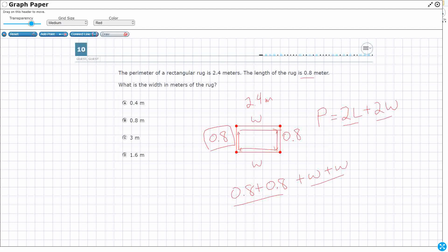So I can say my perimeter equals, I can either do 0.8 plus 0.8 to add it together, or I can double it, double the length, which is what we're supposed to do right here, plus W plus W just makes 2W.